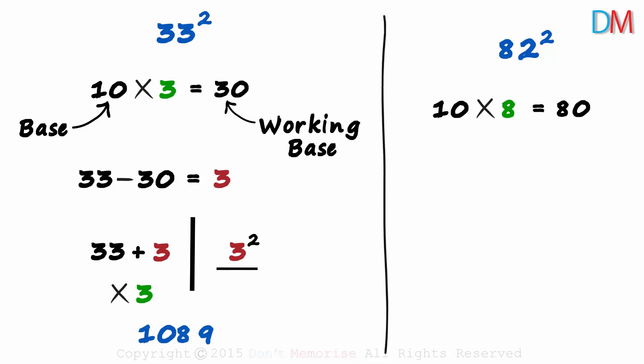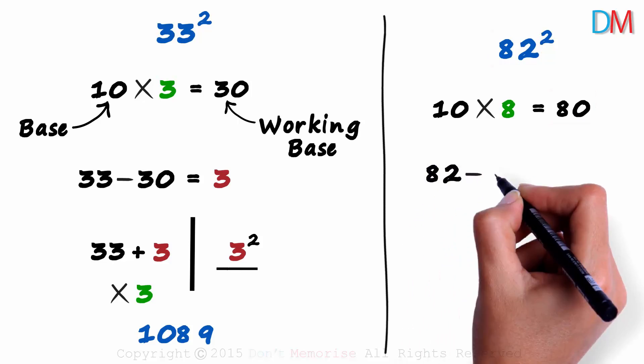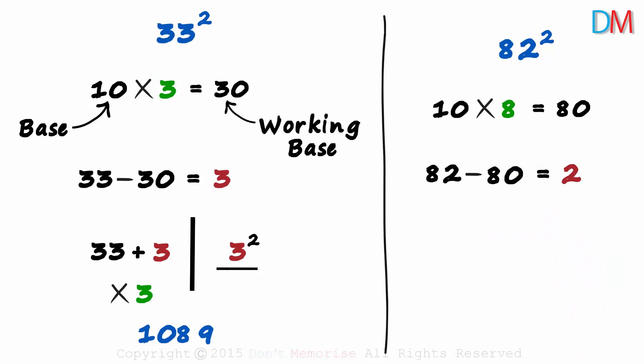In the next step, we find the difference between the number and the working base. That will be 82 minus 80 which is equal to 2. After this step, we make the partition.